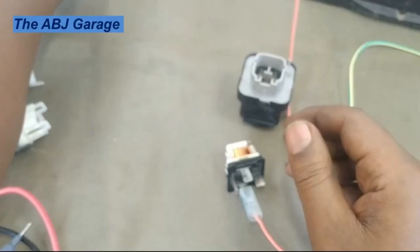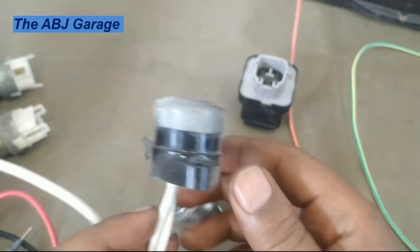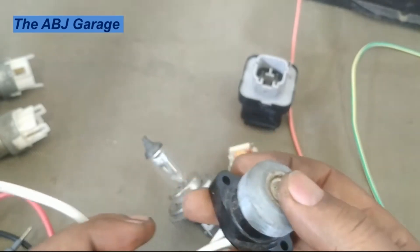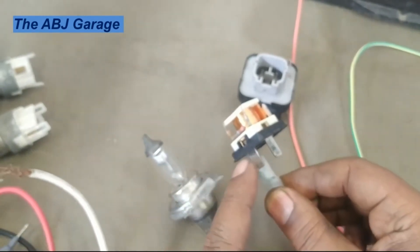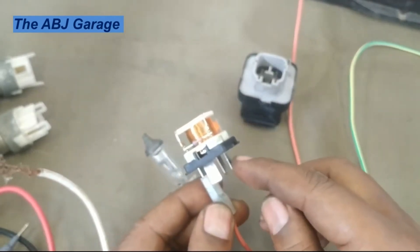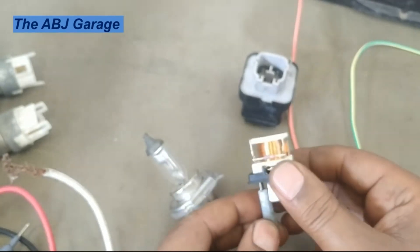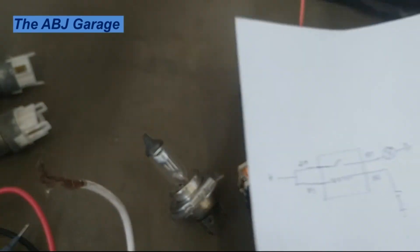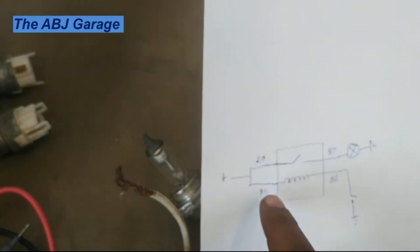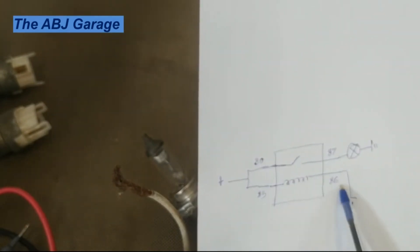For this demonstration, we will be using this halogen headlamp and we will be controlling it with a push button switch. As previously mentioned, the switch is to be connected on terminal 86 and 85 — that is the control circuit. Terminal 30 and terminal 85 will be supplied with battery positive, the load will be connected to terminal 87, and terminal 86 will be controlling the circuit through the switch.